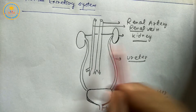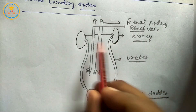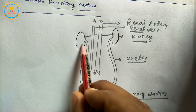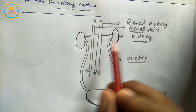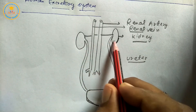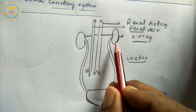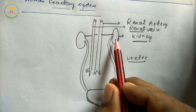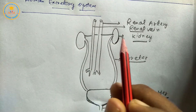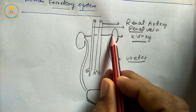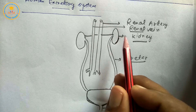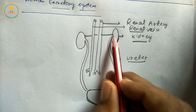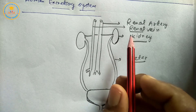Students, kidneys are present as one pair, meaning two. Shape: bean shape. Color: brown. Location: both sides of the vertebral column. The structural and functional unit of the kidney is the nephron. Each kidney has a groove-like structure in the mid part, which is called the hilum.